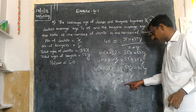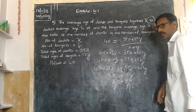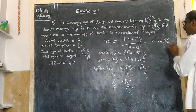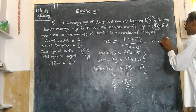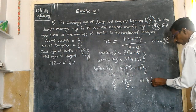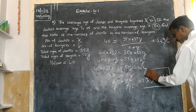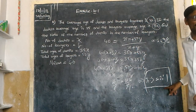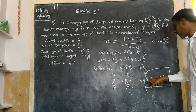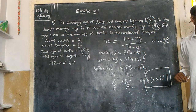Simplifying, we get 5x is equal to 10y. Therefore, x to y is equal to 2 is to 1. So the ratio of the number of doctors to the number of lawyers is 2 is to 1. That is the answer.